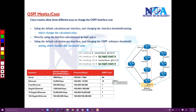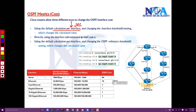By default in OSPF, specifically in the case of Cisco routers which we are focusing on here, there are three different ways to derive the cost values. The first one is based on the default calculation for the interface. I'll explain that in the next slides. The default one is called interface bandwidth.